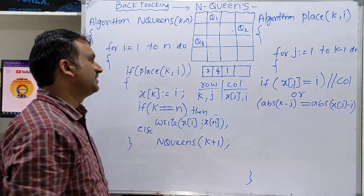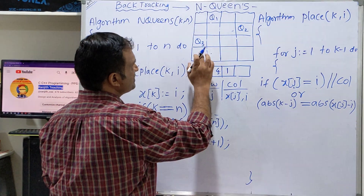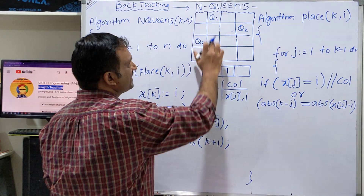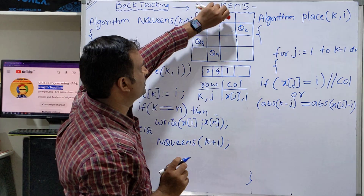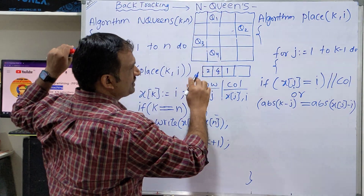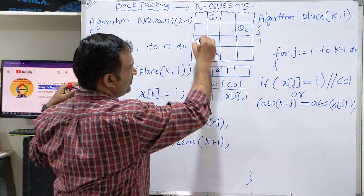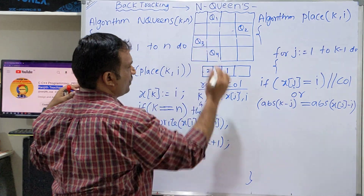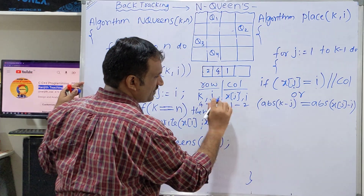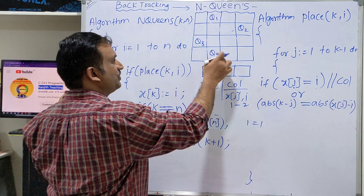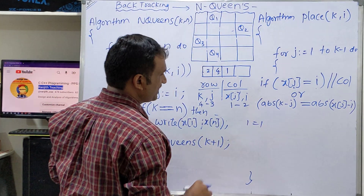Let us verify with an example. Trying to place queen 4, with j = 3: k = 4, j = 3, x[3] = 1, i = 2. Check: absolute(4 - 3) = 1, and absolute(x[3] - i) = absolute(1 - 2) = 1. Since 1 equals 1, the condition is true — we are trying to place the queen on the same diagonal. This perfectly syncs the scenario.